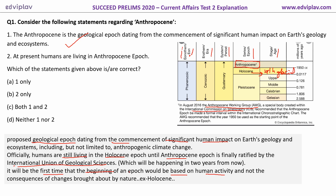Statement two: 'At present, humans are living in the Anthropocene epoch.' Actually, Anthropocene is not recognized so far, so we cannot say that humans are living in the Anthropocene epoch. That's why only statement one is correct, hence option A is correct. Only if it is accepted by the International Union of Geological Sciences can we declare that humans are living in the Anthropocene epoch.